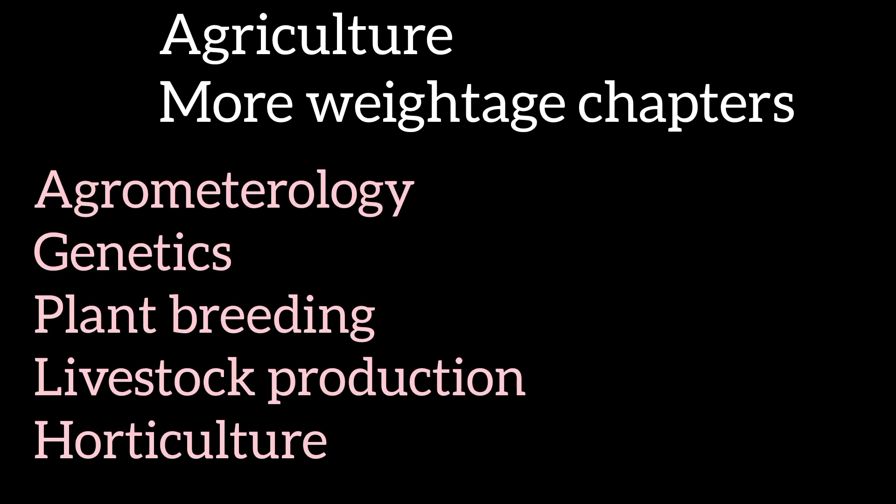There were four important topics in the Agriculture section that were covered in the paper, including Agrometeorology, Genetics, Plant Breeding, Livestock Production, and Horticulture.